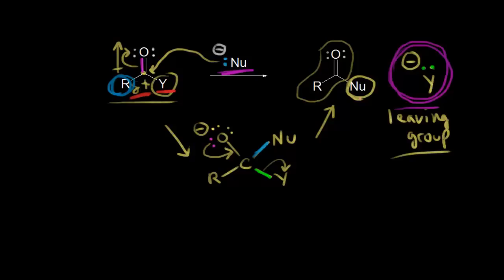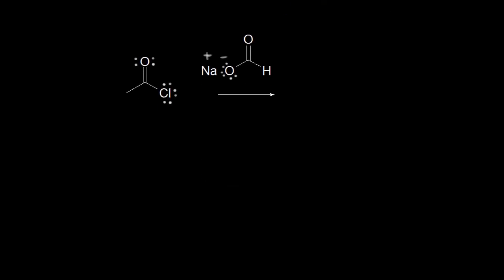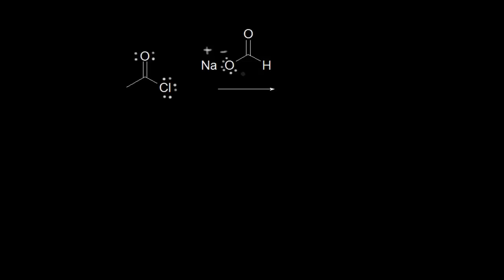Let's look at an example where we try to identify the leaving group — which one is the most stable and why. We have an acyl chloride: acetyl chloride. Oxygen is more electronegative and chlorine is more electronegative, so this carbon is partially positive — that's our electrophile. Our nucleophile is sodium formate, with a negative one formal charge on the oxygen. This nucleophile will attack our electrophile, and these electrons are going to come off onto the oxygen.